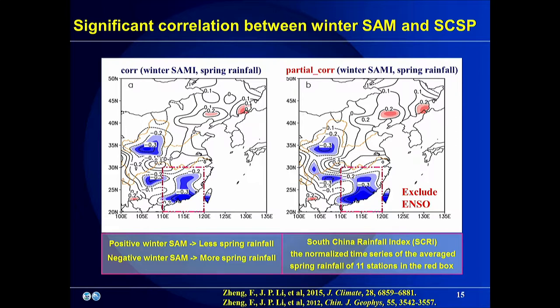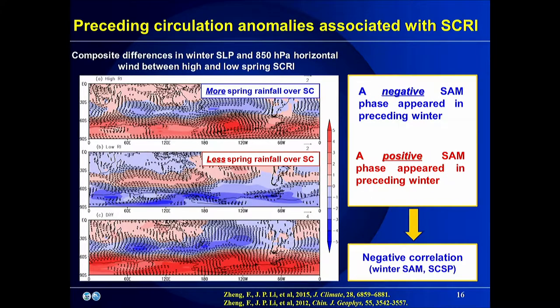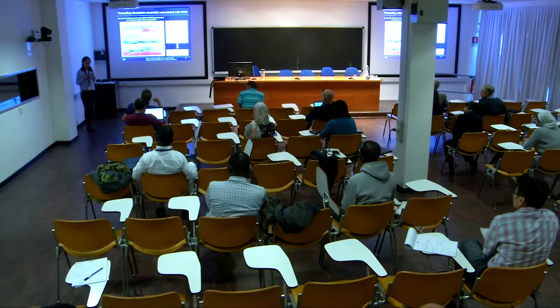Partial correlation analysis is carried out to exclude the ENSO signal, and the negative correlation in South China is still significant after removing ENSO. To quantify the South China spring rainfall variability, we define a South China rainfall index, which is a normalized time series of average spring rainfall from 11 stations. In response to a question, both the winter and spring ENSO signals are removed.